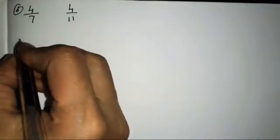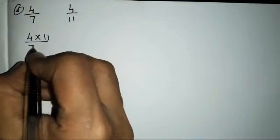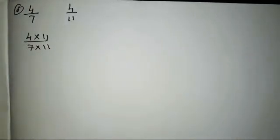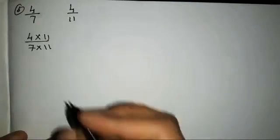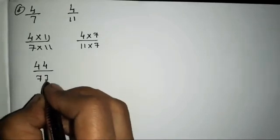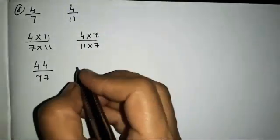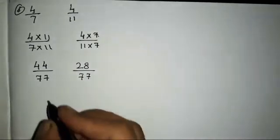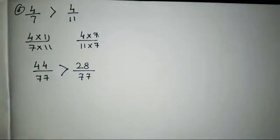The sixth sum is 4 upon 7 and 4 upon 11. We equalize the denominators by multiplying 4/7 by 11 and 4/11 by 7. So 4 elevens are 44 over 7 elevens 77, and 4 sevens are 28 over 11 sevens 77. Which is greater? 44 is greater, so 44 upon 77 — this fraction is greater.